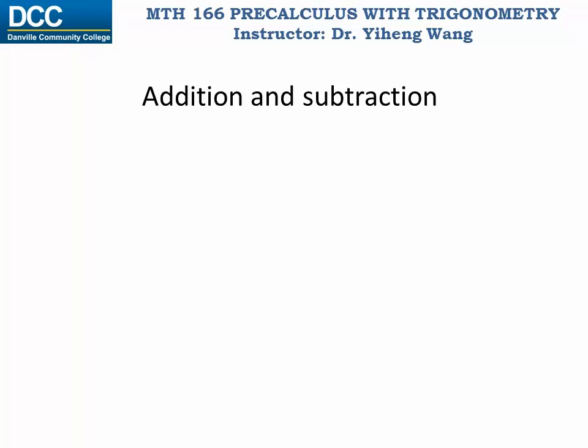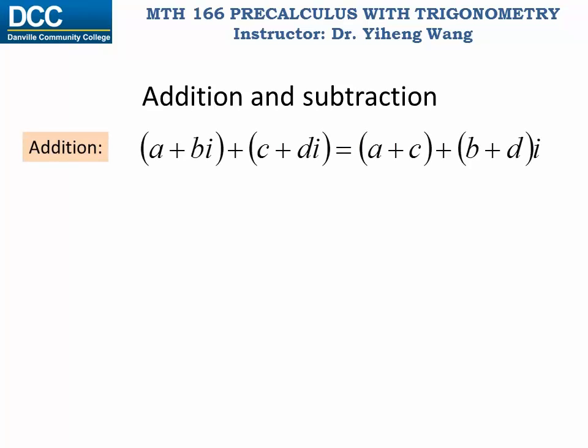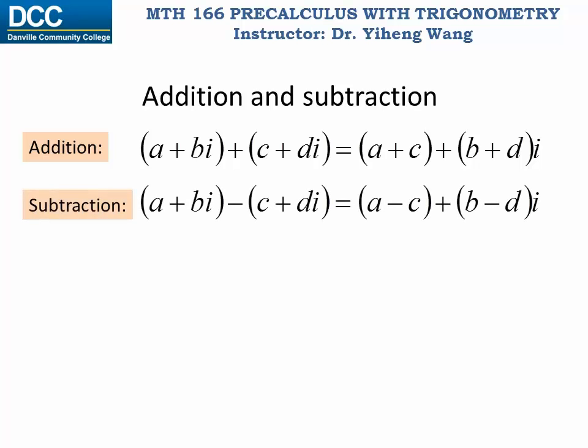The addition and subtraction of two complex numbers are quite straightforward. For addition, to add a plus bi and c plus di, we add the real parts together to get the new real part — a plus c — and add the imaginary parts together to get the new imaginary part, so bi plus di equals b plus d times i. Similarly for subtraction, a plus bi minus c plus di gives real part a minus c and imaginary part b minus d times i.